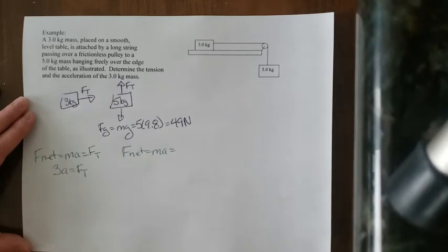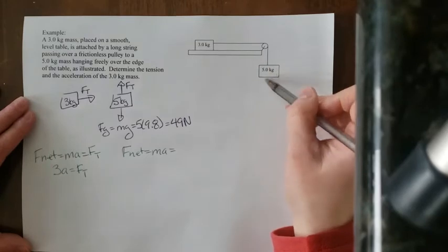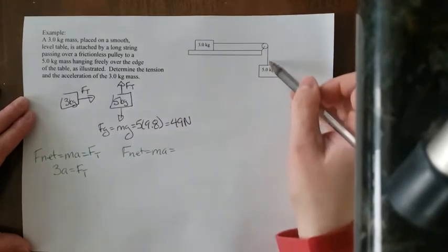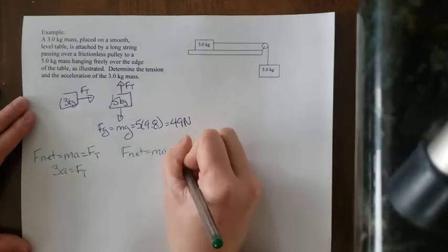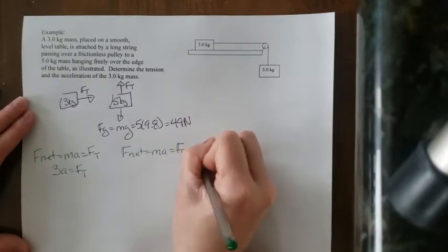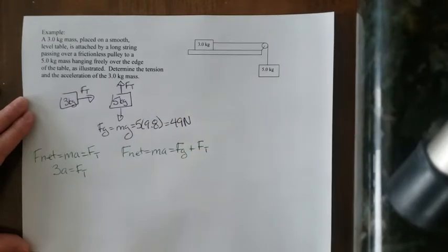Always write the bigger one first. The way you can tell which one's bigger is which way it's moving. So if I were to let go of this mass, it would go down. So the downward force, which is the force of gravity, must be bigger. So I'm going to write down force of gravity plus the force of tension. Tension's in the other direction.